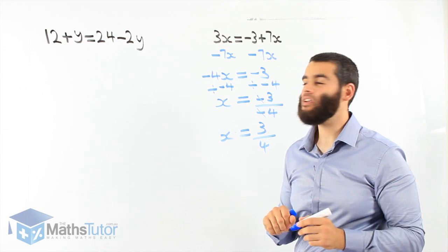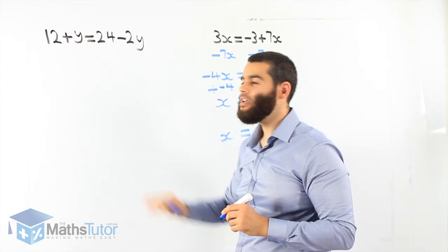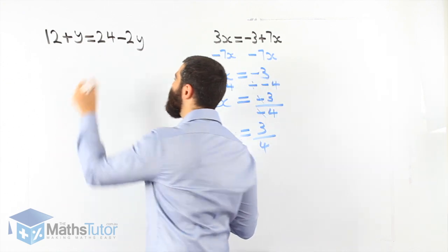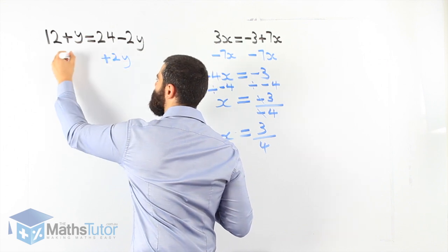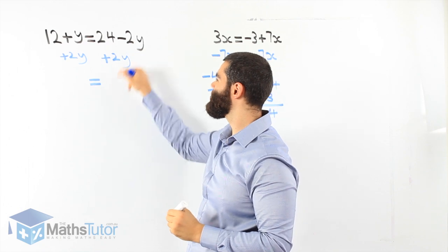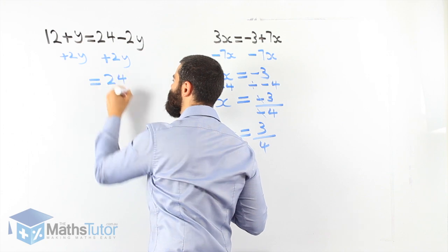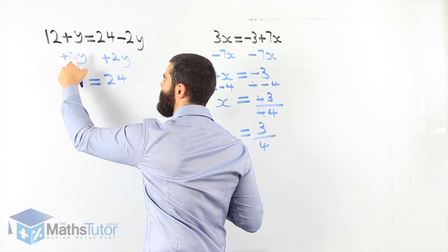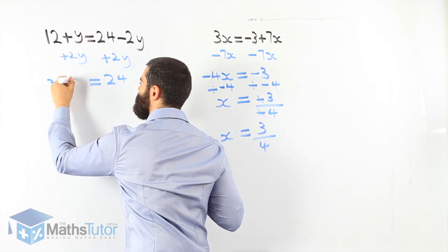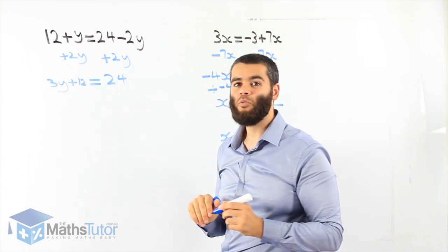Next one: 12 plus y equals 24 minus 2y. Again, we have pronumerals on both sides, so we get rid of the one on the right-hand side. Minus 2y — the opposite of minus is plus 2y. Plus 2y on the other side too. 24 minus 2y plus 2y: the negative 2y and plus 2y cancel out, leaving 24. And 12 plus y plus 2y: y plus 2y is 3y, plus the 12. So we have 3y plus 12 equals 24.